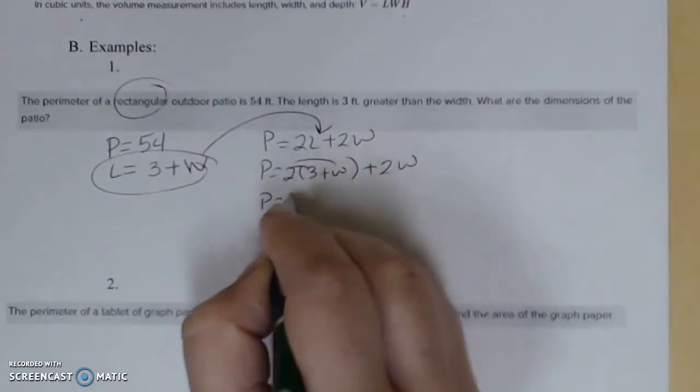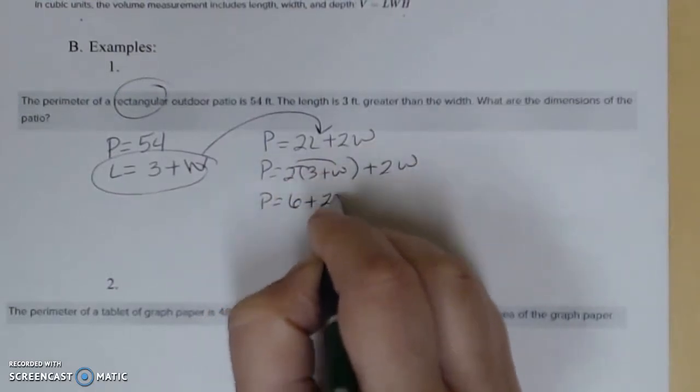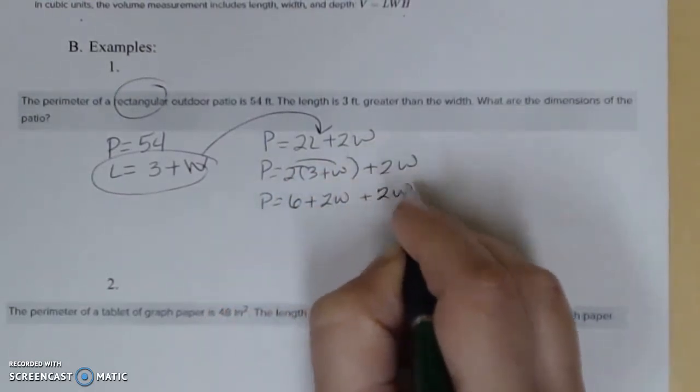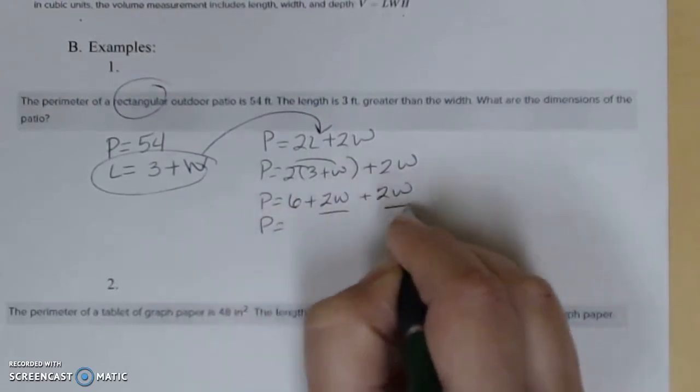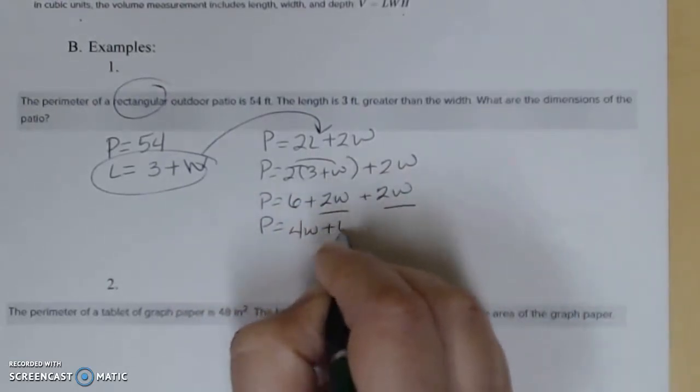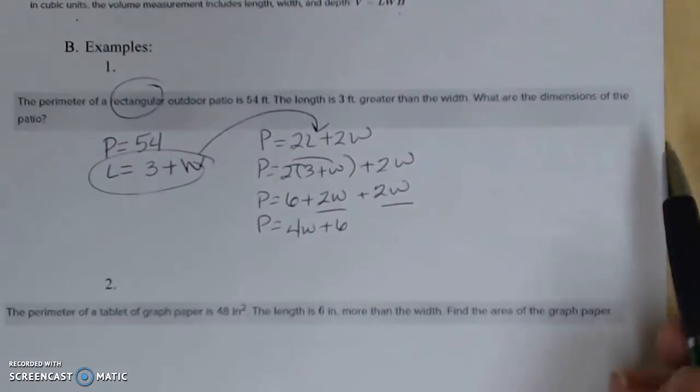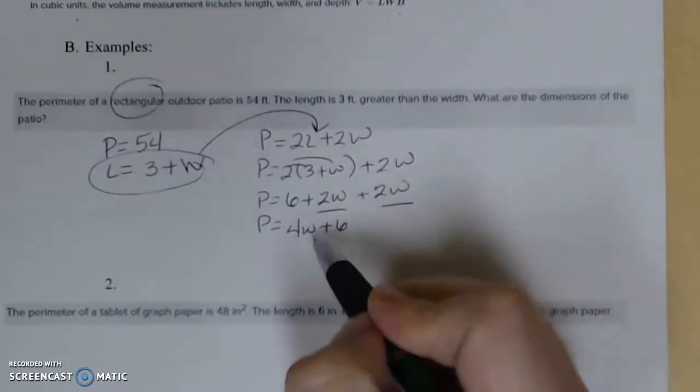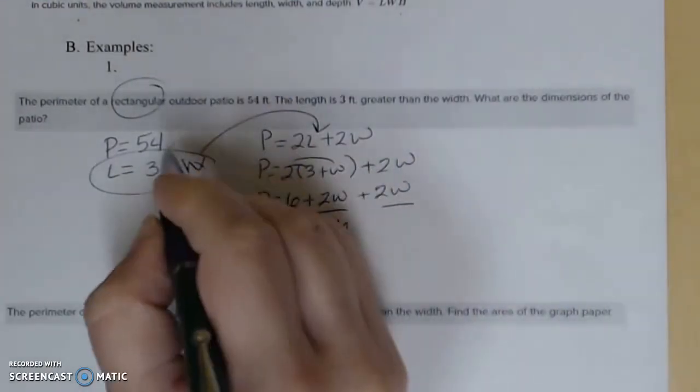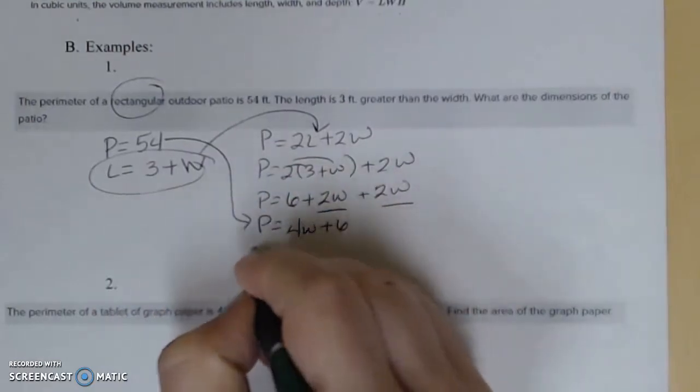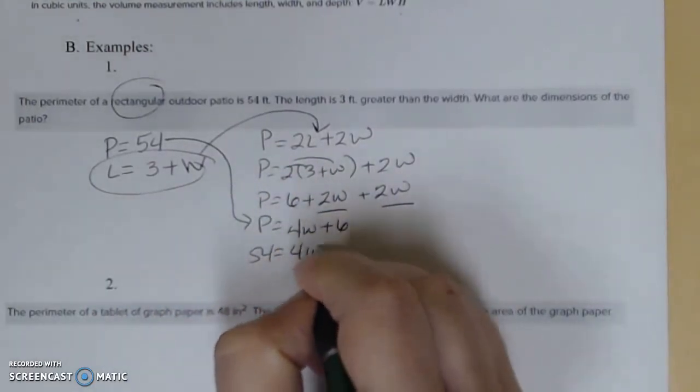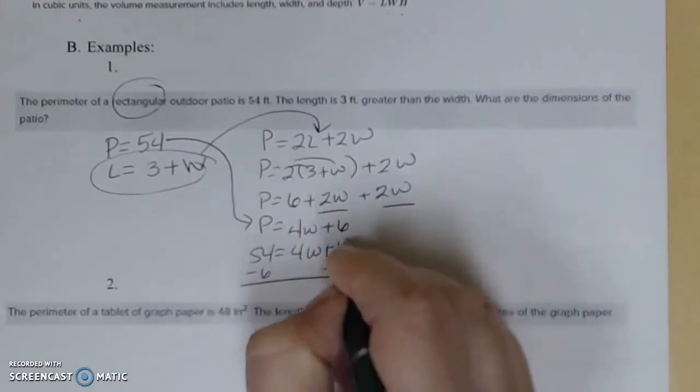So perimeter is equal to 2 times (3 plus W) plus 2W. So my perimeter is equal to distribute 6 plus 2W plus 2W. I'm going to combine like terms. And then now we need to figure out, okay, I need only one letter. Oh, yeah, perimeter is equal to 54. So 54 is equal to 4W plus 6.